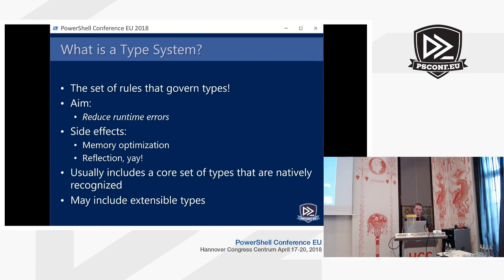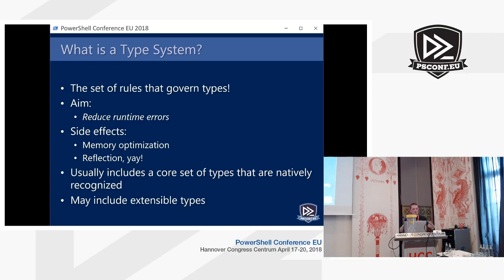In a bunch of high-level languages we get an aspect called reflection, which we're going to dive into a little bit. A type system also usually includes a core set of types — a minimum set of types that a language needs to implement to function. We're going to look at what that looks like in .NET. Type systems also usually include extensible types — whoever invented the programming language had built-in data types, but we can also extend the type system and define our own type definitions.